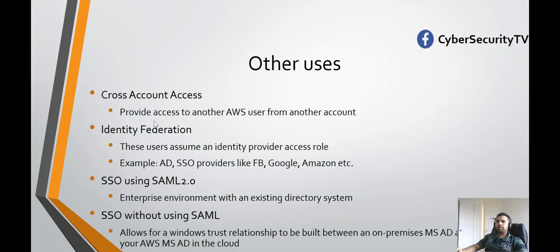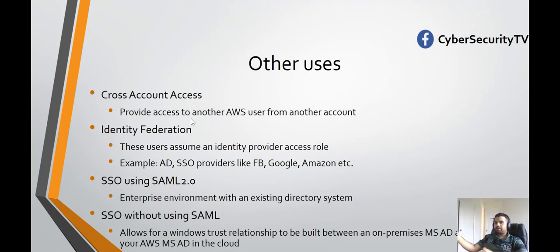We talked about AWS services. Now, other users — here you have cross-account access. Imagine you have a production and non-production environment within AWS, and for some reason a non-production user needs access to the production account as well. You can grant that access using cross-account access. Another option is identity federation, where the user assumes the identity provider access role — for example, Active Directory, SSO, Facebook, Google, Amazon, etc.